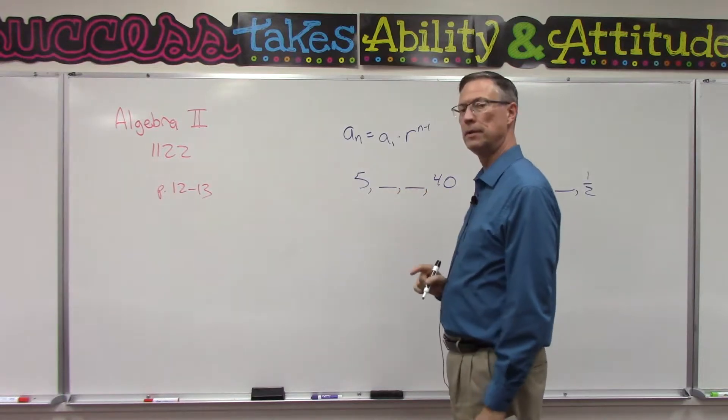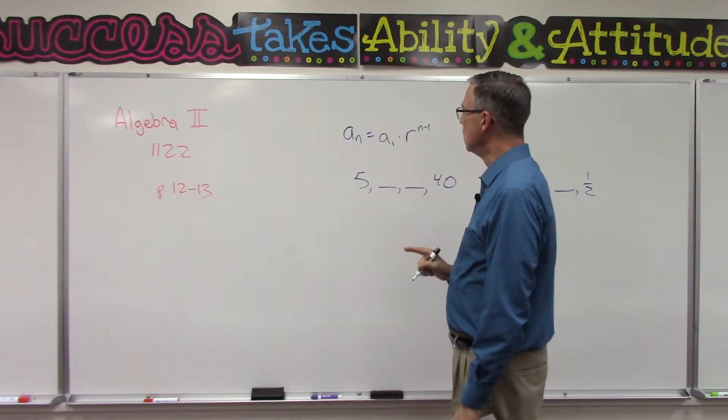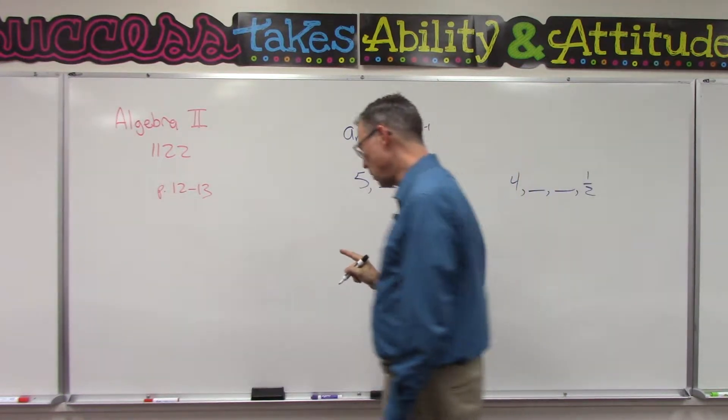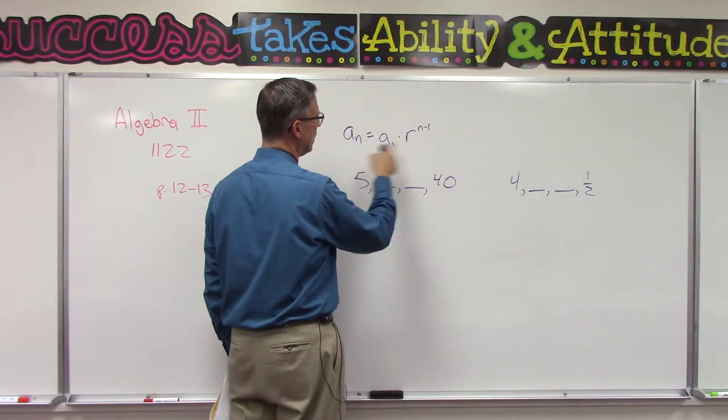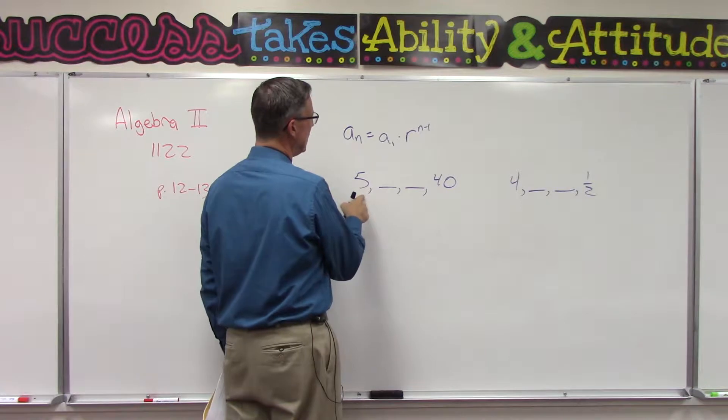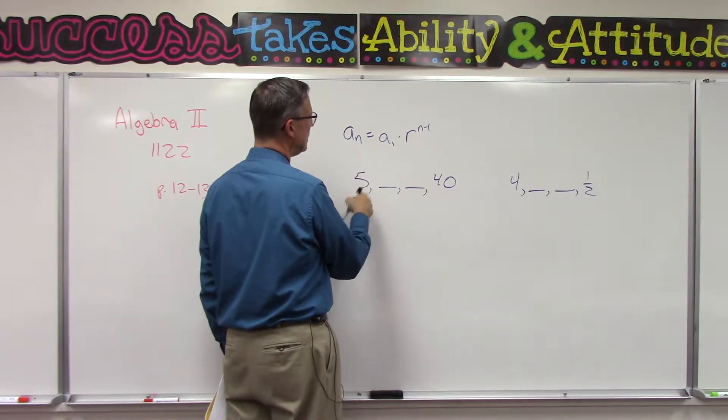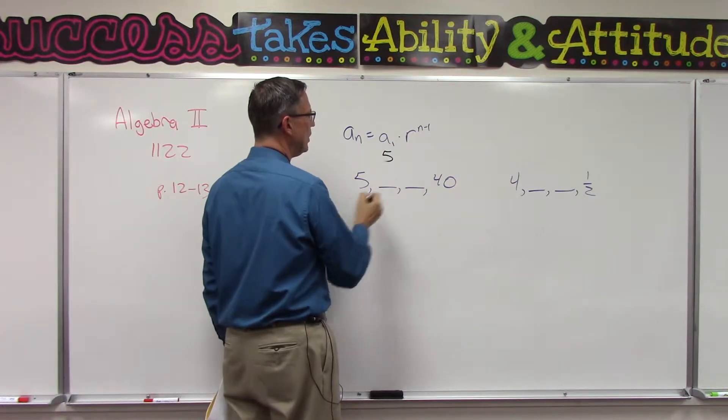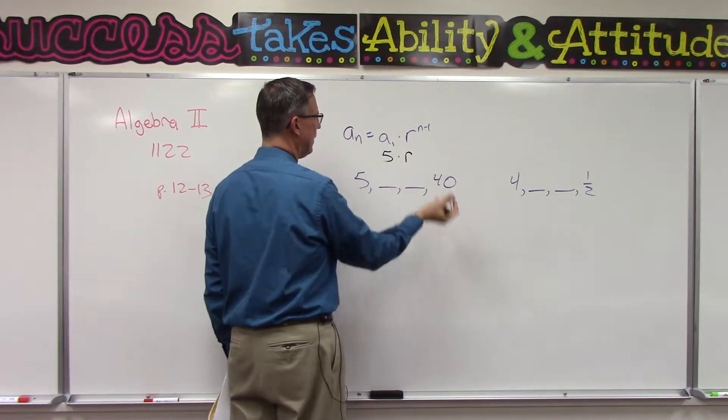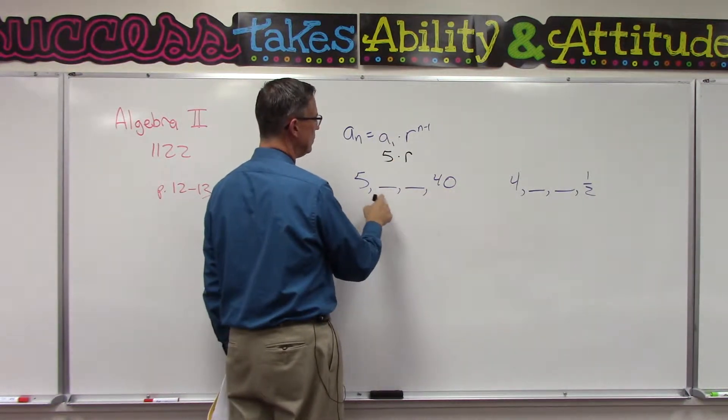They want us to fill in these blanks here. Let's see if we can figure out what from this series we can tell. First of all, the first term is five, so a1 is five. We don't know the r, so we're going to leave that blank. How many terms do we have? One, two, three, four. We have four terms.